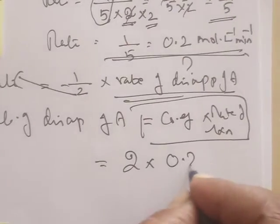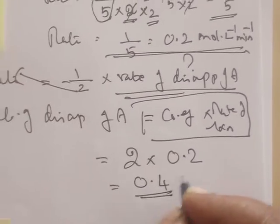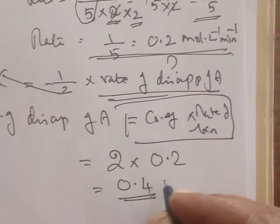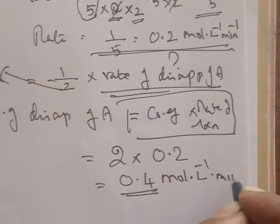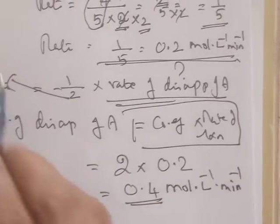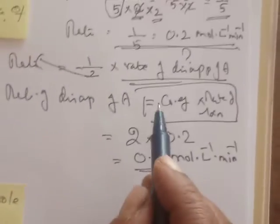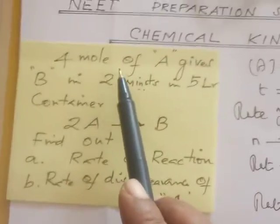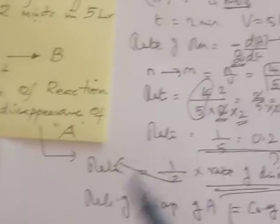The coefficient is 2 and the rate of reaction is already calculated as 0.2. So the answer is 0.4 as the rate of disappearance, with units mol per liter per minute. So the rate of reaction is 0.2 and the rate of disappearance of A is 0.4. The key challenge here is that values are given in terms of moles and must be converted into molarity. Now let us move to the next problem.